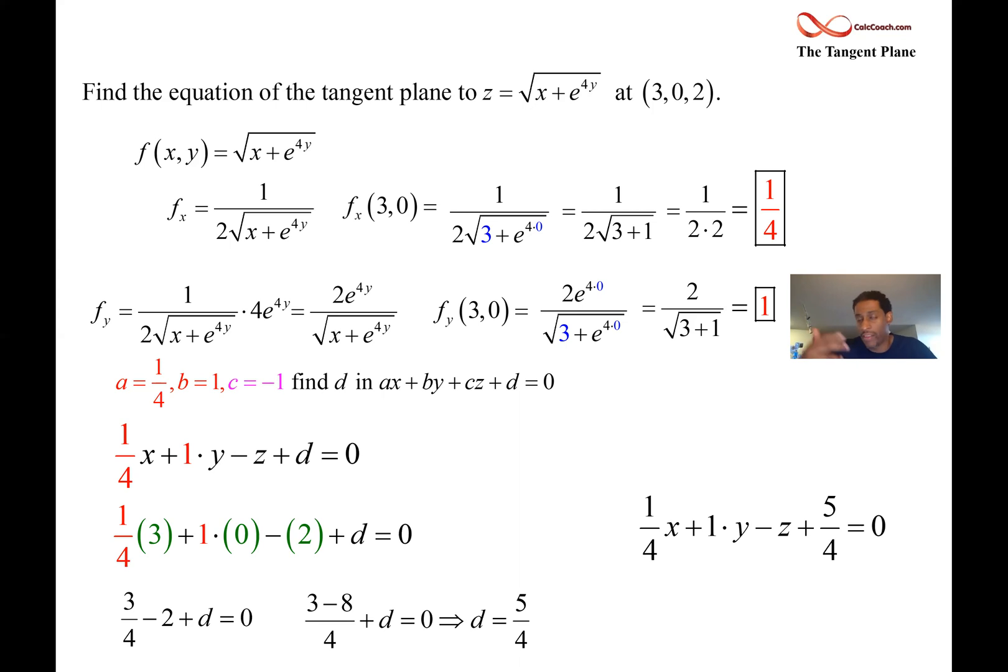You're done. Yeah, but like in the form of y equals mx plus b, you're done. You have the m, you have the b, you're done. Well, here we have the a, the b, and the c, and the d, we're done. Except for you normally don't see the equation having these fractions in it. More often than not, we have integers. And so we're going to multiply everything by 4. Clear out the fractions. And we end up with x plus 4y minus 4z plus 5 equals 0.